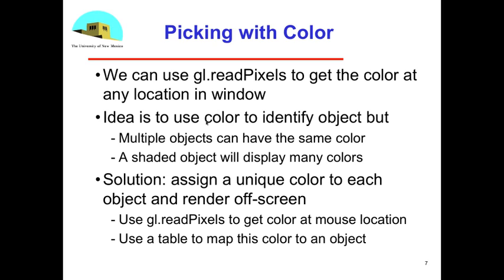The problem in reality is that many objects can have the same color. If I'm doing an application where I'm worried about the properties of the object, the material properties I want to use, I may be having the same materials used for multiple objects, and they're going to wind up displayed in the same color. So now I can't distinguish between objects just by color.